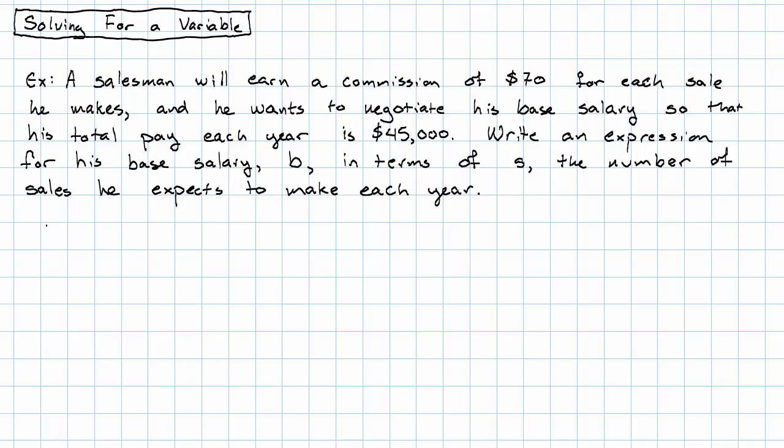The salesman's total pay is his base salary plus his commission per sale times his number of sales. Plugging in what we know, his goal, $45,000, is his base salary, that's called B, plus his commission per sale times his number of sales. So this is an equation relating B and S.